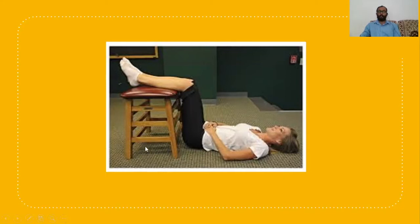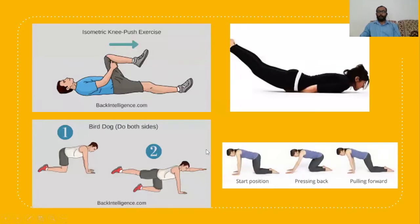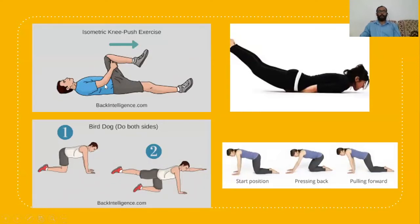After pain relief, the patient shall undergo rehabilitation with the isometric knee push exercise. With the hip and knee at 90 degrees without the support of a stool, ask the patient to do knee extension and resist it with the hand placed on the hamstring muscle. In the next phase, the hand is placed over the quadriceps and the patient is asked to do hip flexion against resistance. Both hand and knee should stay in the same position. This isometric knee push exercise is done for left and right, and is very effective in sacroiliitis.